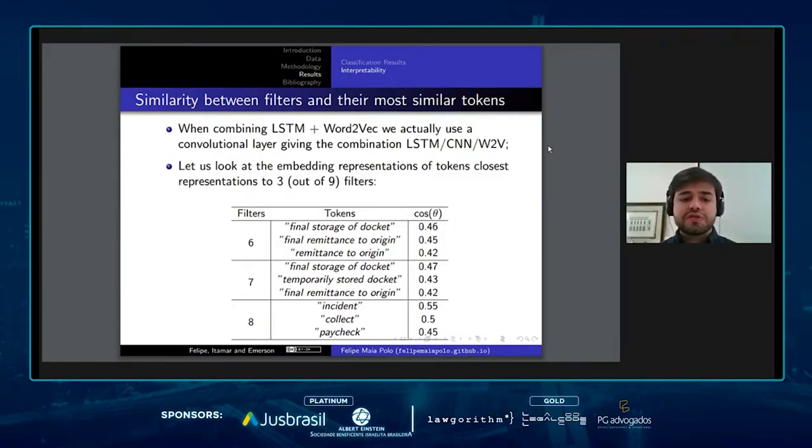Basically, we take a look at the embedding representations of tokens closest to representations of three out of nine filters. For example, here we have filter six. You can see that when a proceeding is going to be archived or is archived, filter six and seven are related to the archived and suspended classes, while filter eight doesn't seem to be related with any of the classes at all.